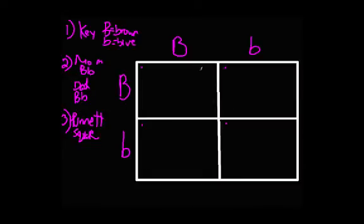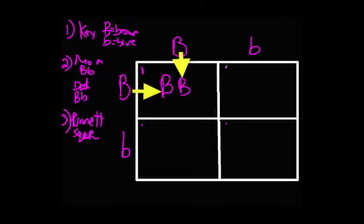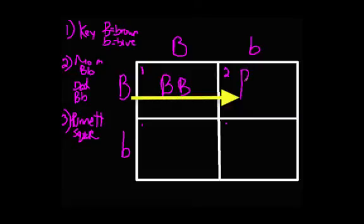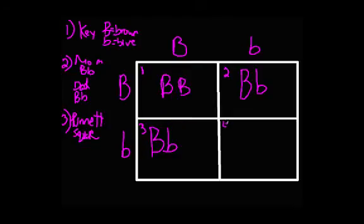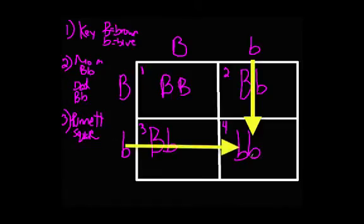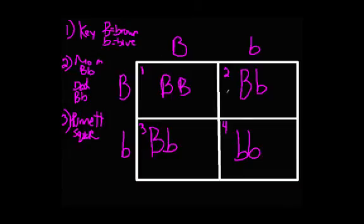Think of it like a multiplication table. For the first possible offspring, we take one allele from each parent — big B from mom and big B from dad. Moving to the second box, we take big B from one parent and little b from the other — typically writing the big B first. For the third possibility, we get big B and little b again. And for the fourth offspring, we take little b from one parent and little b from the other. These four combinations represent the genotypes of the possible offspring.